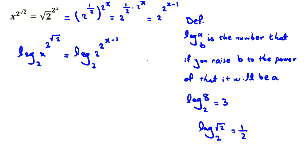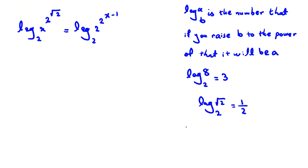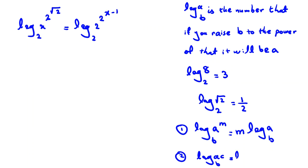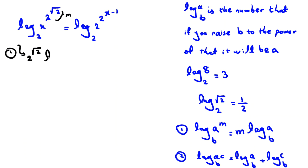Now I'll give you two important rules in logarithms. The first rule: log of a to the power of m in base b equals m times log a base b. The second rule: log(a·c) in base b equals log a base b plus log c in base b. Now we want to use these rules.